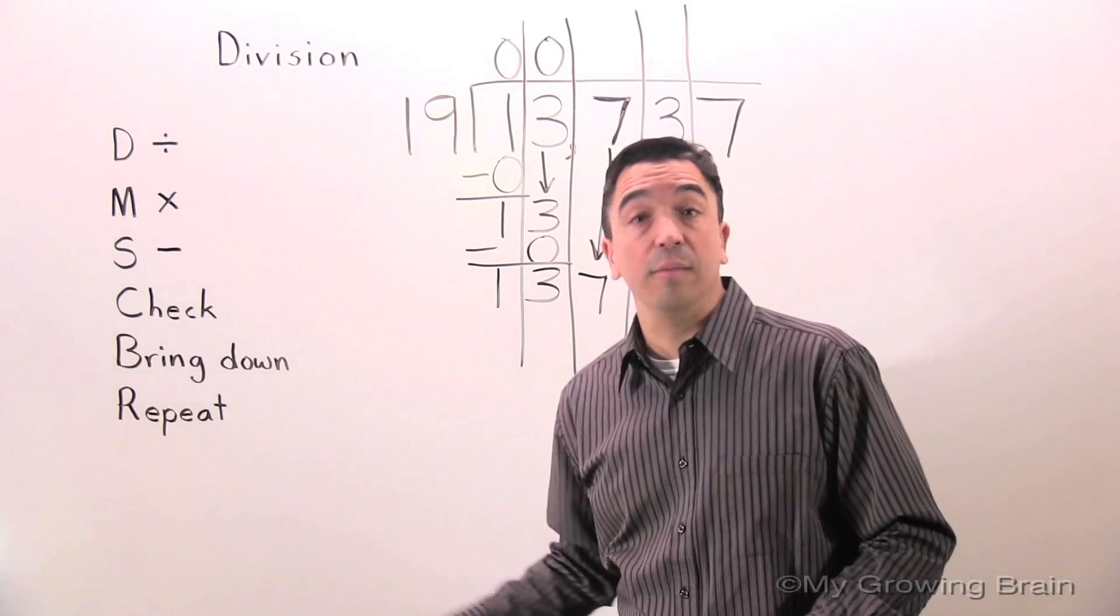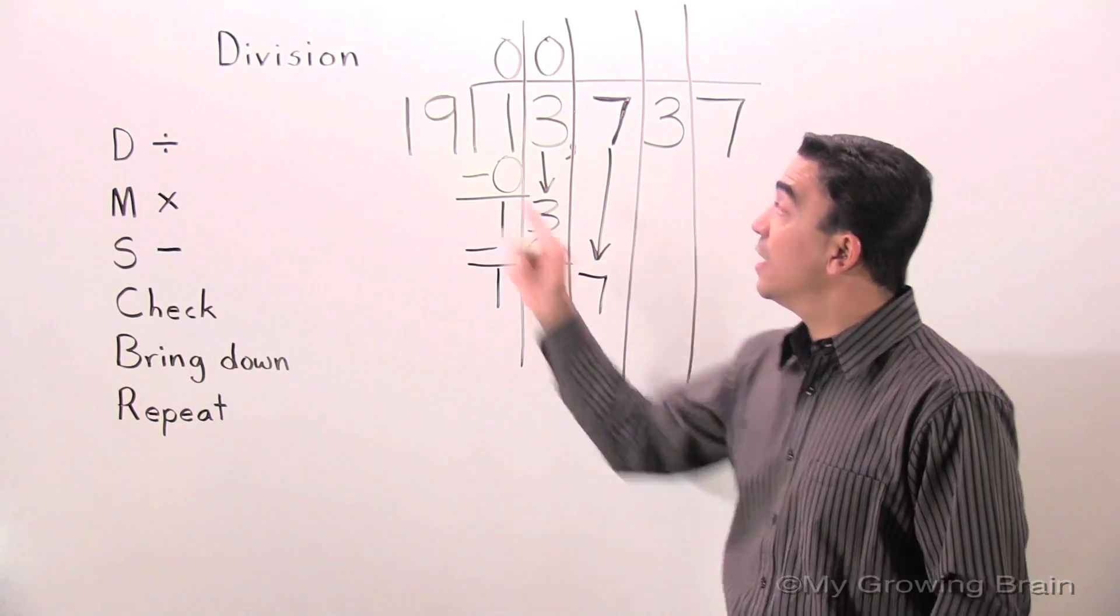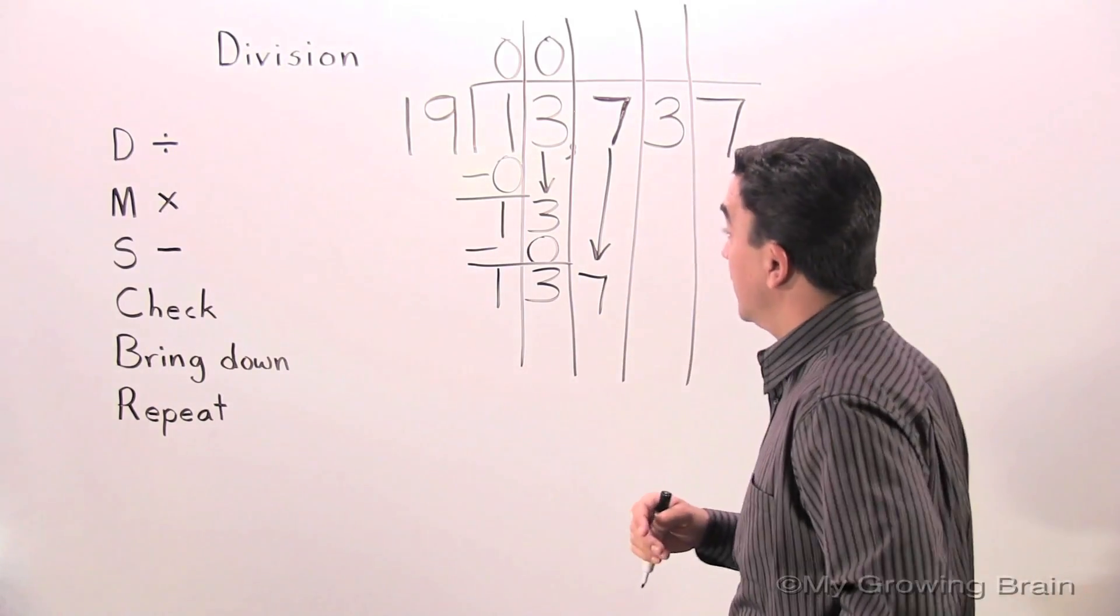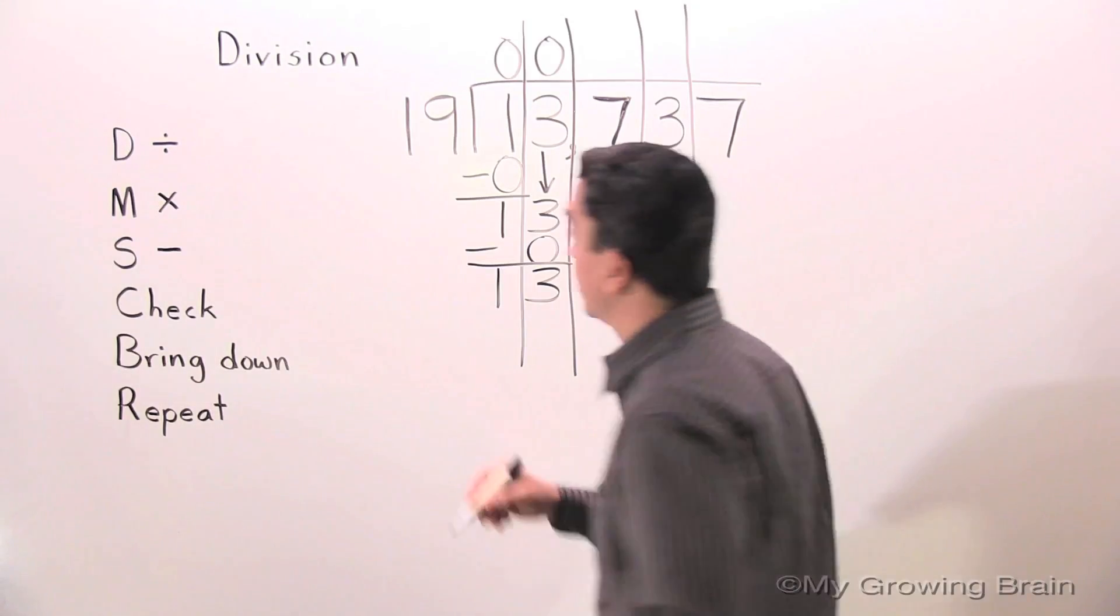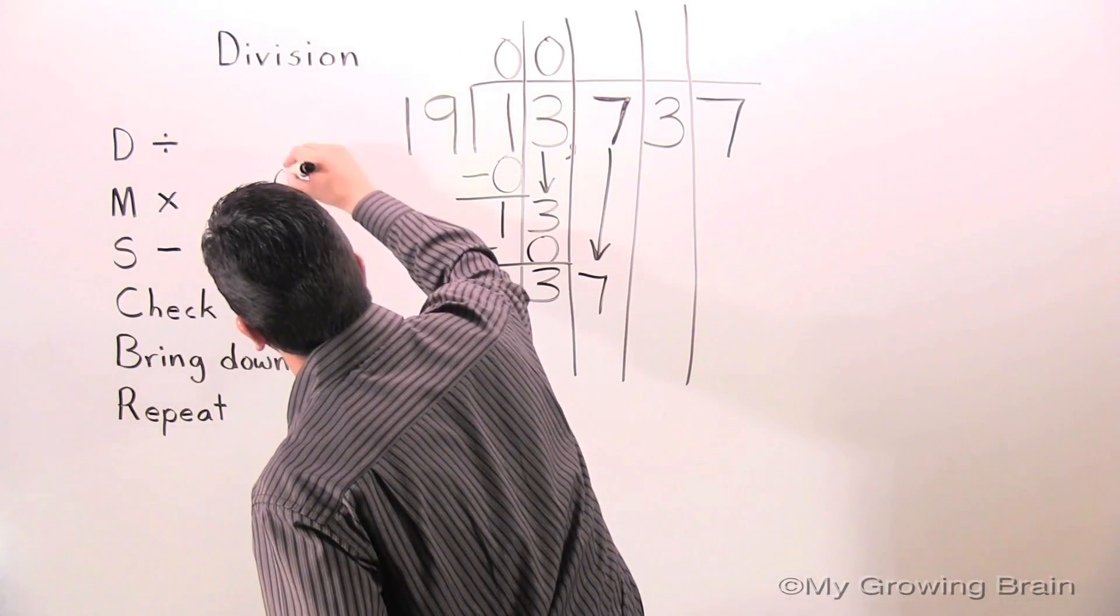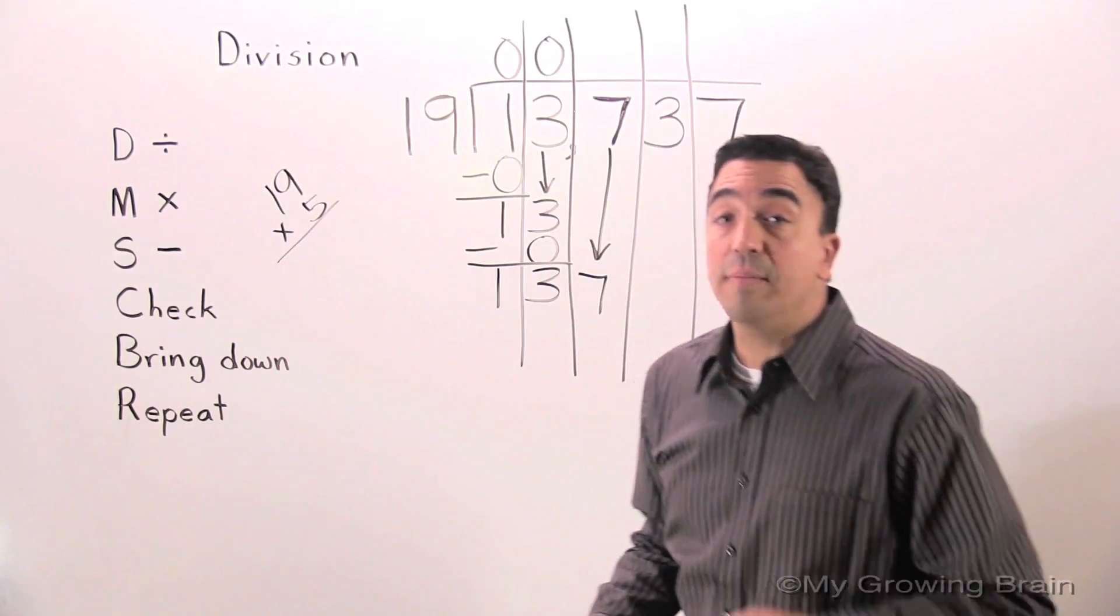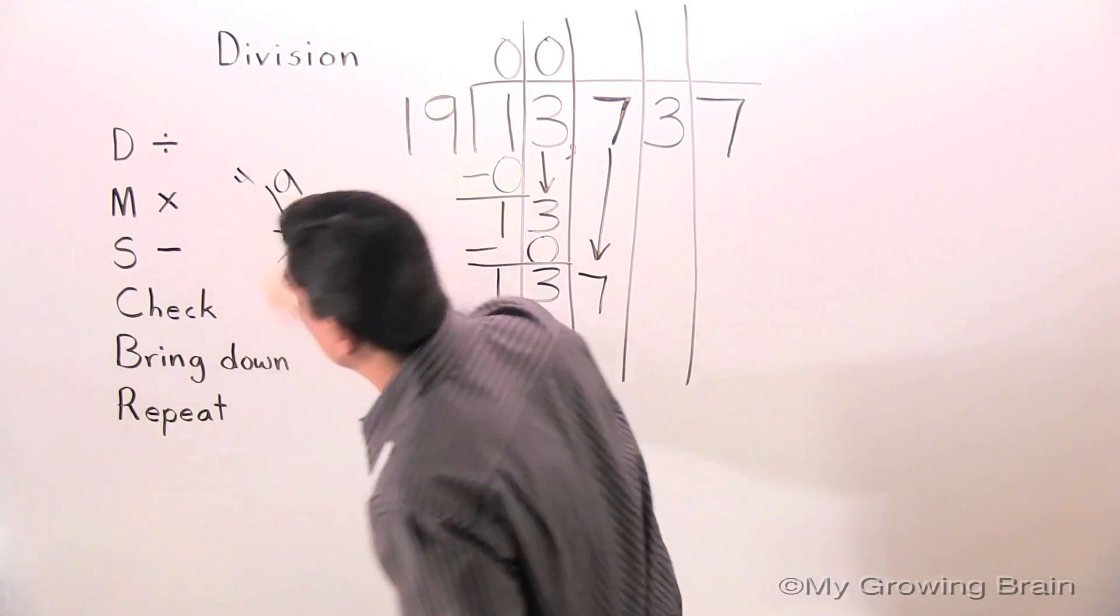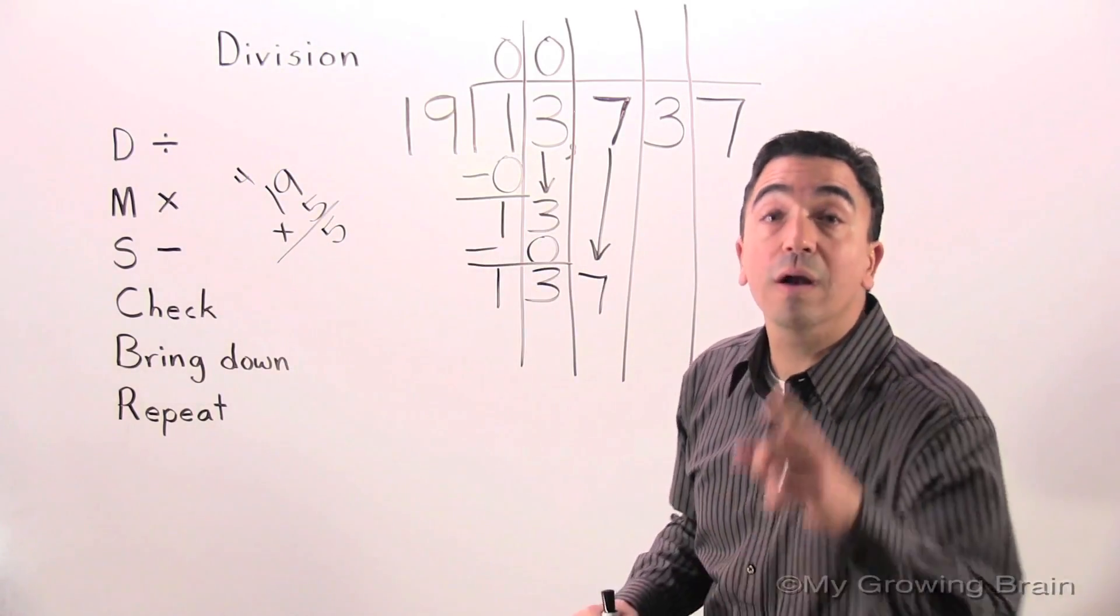All right. Repeat the process. Back to the top. Divide. 137 divided by 19. We're going to have to experiment. It's a big number. I'm going to try 19 times 5. 5 times 9 is 45. Regroup the 4. 5 times 1 is 5. Plus 4 is 9.